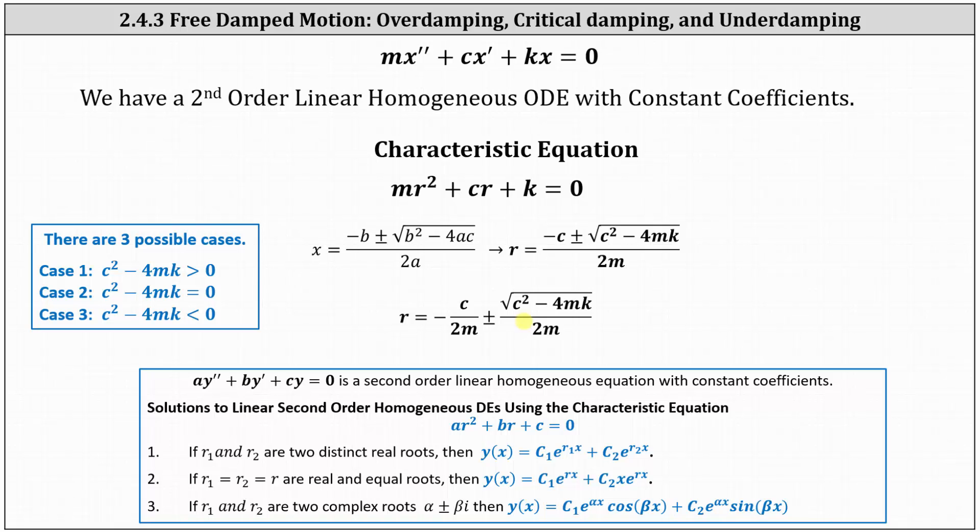We know from solving the similar differential equation ay double prime plus by prime plus cy equals zero, the types of solutions affect the form of the general solution. The same holds true for the discriminant, or in this case c squared minus 4mk, which indicates whether we have overdamping, critical damping, or underdamping.